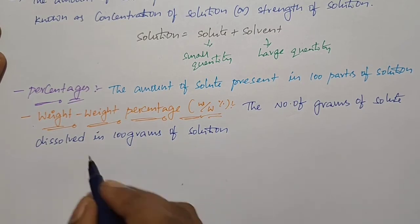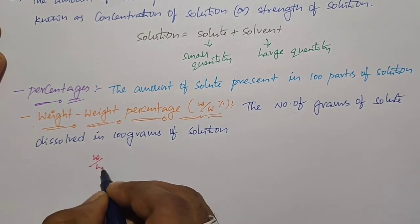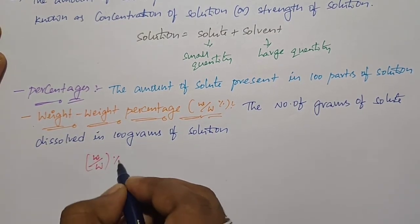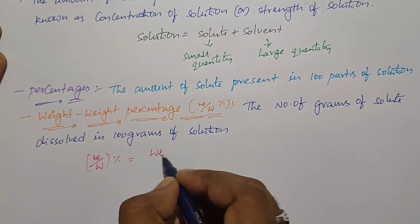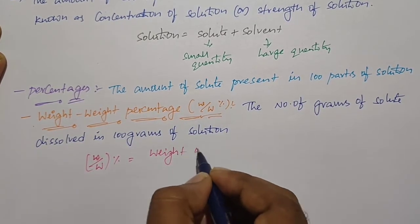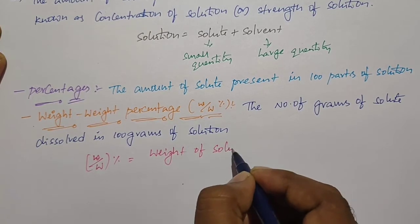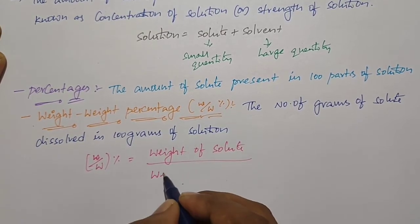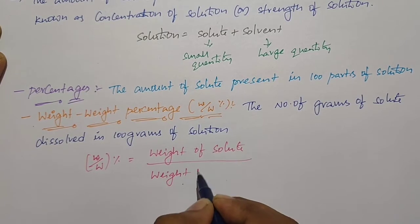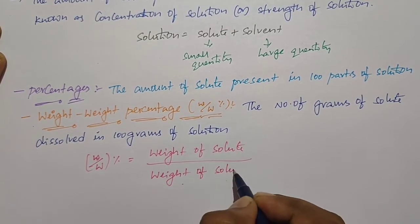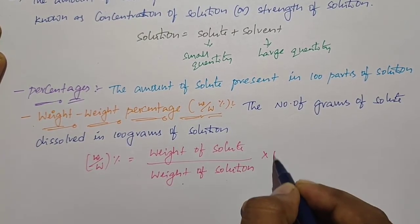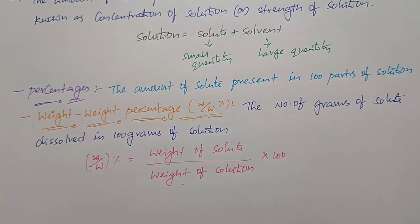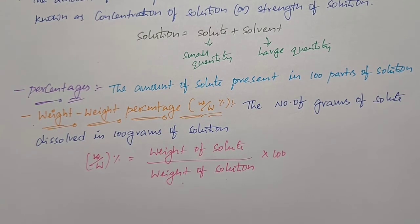The formula for weight-weight percentage: w/W = (weight of solute in grams / weight of solution in grams) × 100. This is about weight-weight percentage.